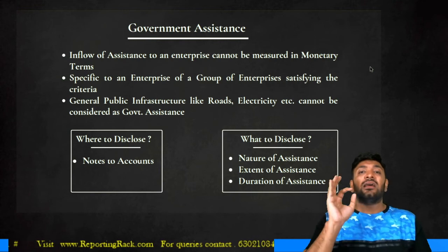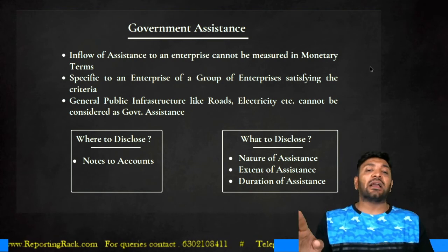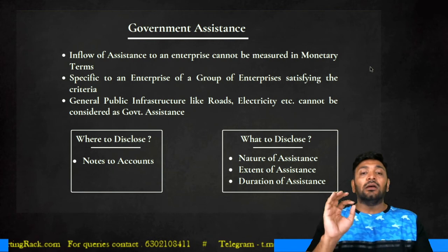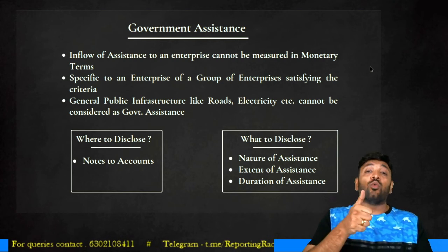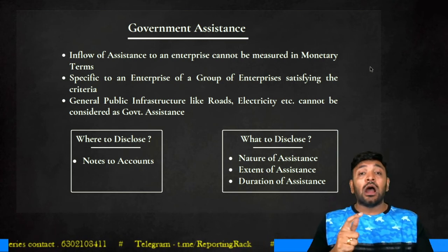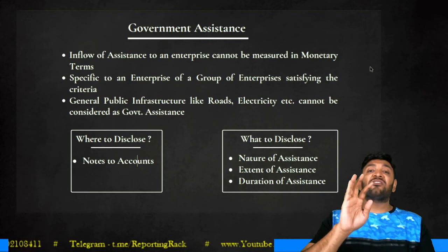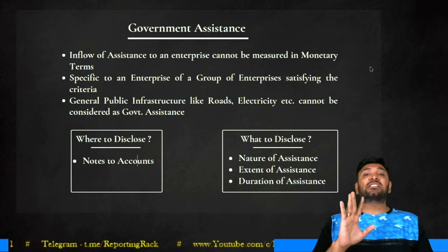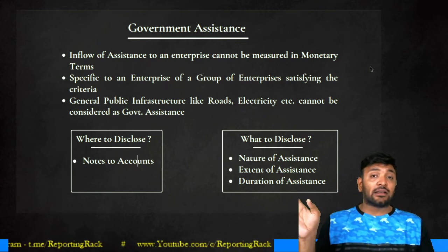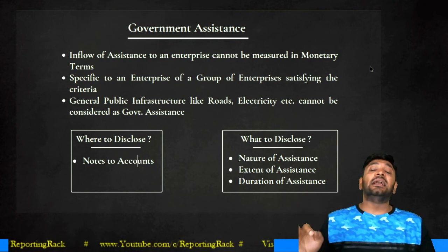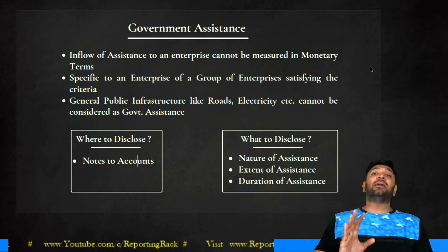General public infrastructure like roads being laid, electricity, and water connections are not considered government assistance. Disclosure of government assistance goes in the notes to accounts, covering: nature of government assistance (e.g., sewage treatment plant), extent of assistance (e.g., metric tons of sewage treated free of cost), and duration (e.g., available for the next 33 years of lease).